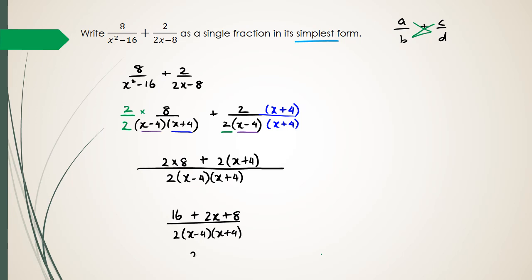Simplifying the numerator, I end up with 2x plus 24. And as for the denominator, it's going to stay the same, which is 2 times x minus 4, and x plus 4.